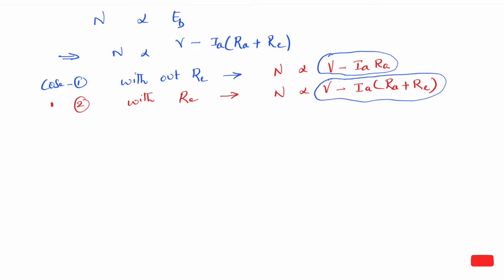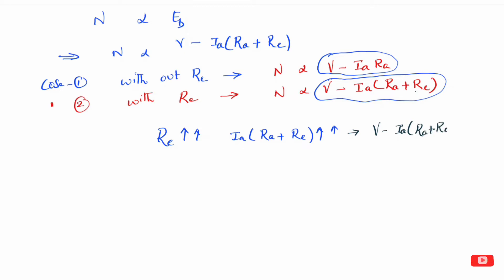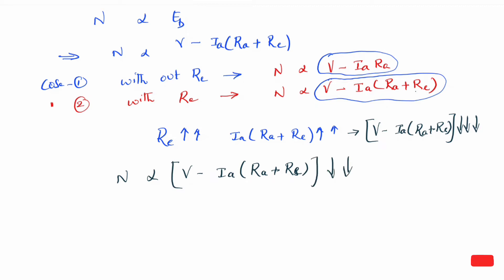As Re increases, Ia into Ra plus Re increases. When external resistance is increased, Ia into Ra plus Re keeps increasing. So the total V minus Ia into Ra plus Re keeps decreasing. Using the formula — speed proportional to V minus Ia into Ra plus Re — as this total decreases, speed automatically decreases.